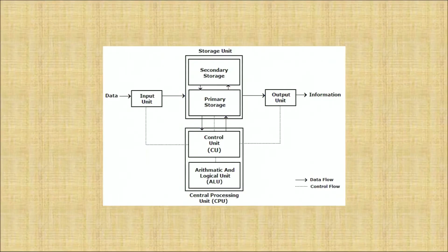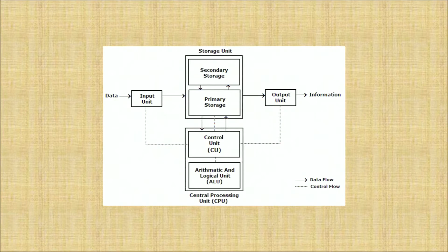What are the components of a computer? Number one is data. When the data goes into the input, it is being processed through a CPU and we get an output which is called information. Data is raw — what we collect from here and there is the data. What we get as an output is information. Information is always a meaningful output of the raw data that we have input into the computer system.